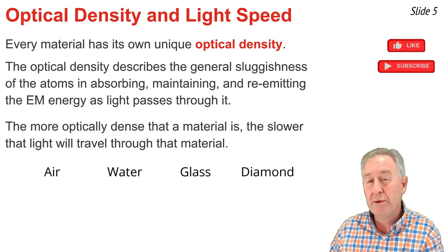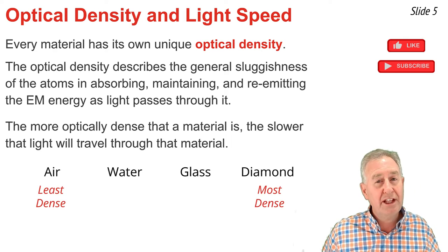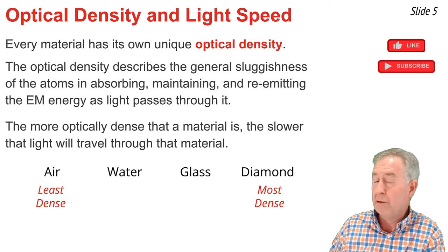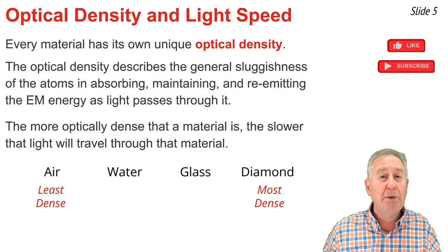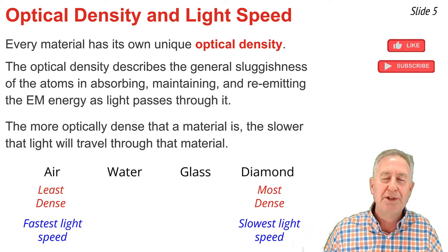Here are four materials arranged in order of their optical density, with air being the least optically dense and diamond being the most optically dense. Given our rule about optical density and speed, we would reason that light will travel fastest through air and slowest through diamond.